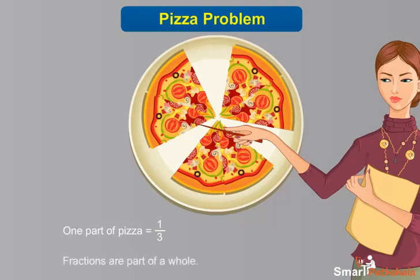So each of them gets one third of the pizza. Fractions are part of a whole. The top part of a fraction is called the numerator, while the bottom part of a fraction is called the denominator.